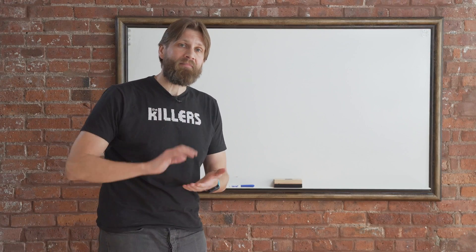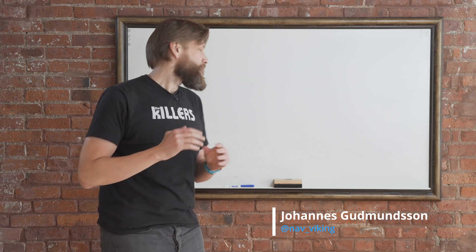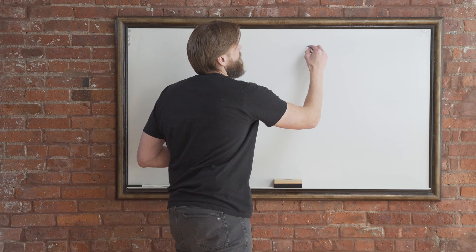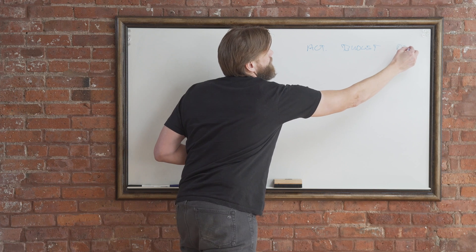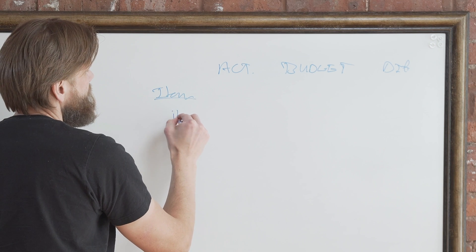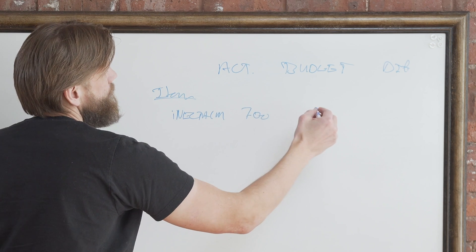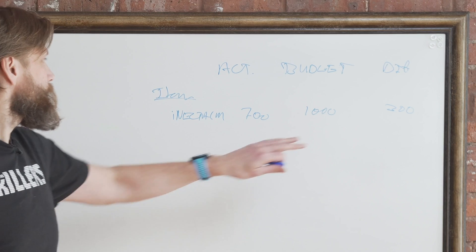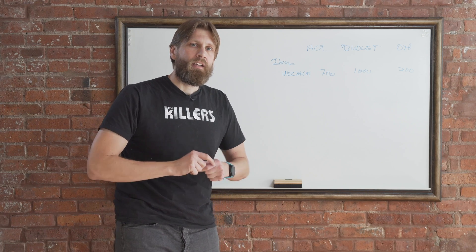We've finished setting up the budget and we're ready to look at budget versus actual. We're going to get to a report showing actual, budget, and difference — for the Inecta coffee mug item. So we might see something like 700 sold, the budget was 1000, and the difference is 300 — meaning we're 300 below budget on sales.